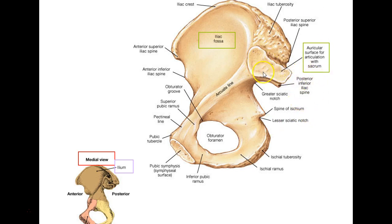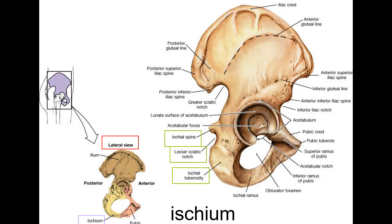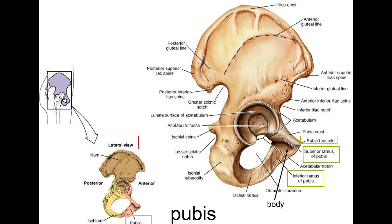There's the spine of the ischium again, the greater sciatic notch, the lesser sciatic notch, and the ischial tuberosity. You can see the rami — rami is plural, ramus is singular. You can see the pubic tubercle and on this side the pubic symphysis, where fibrocartilage sits between this and the other coxal bone.